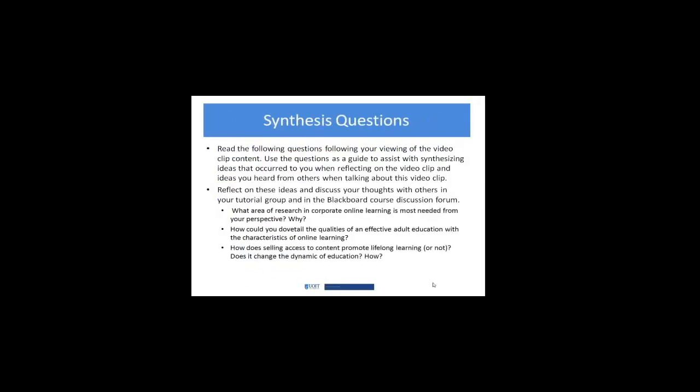Some synthesis questions to consider now that you've had a quick overview of corporate online learning and explored the embedded links: What area of research in corporate online learning is needed most, from your perspective and why? How can you dovetail the qualities of effective adult education with the characteristics of corporate online learning? And how does selling access to content promote lifelong learning — or not? Does it change the dynamic of education, and if so, how? We'll discuss these questions in our tutorial this week, and I'm looking forward to hearing your thoughts.